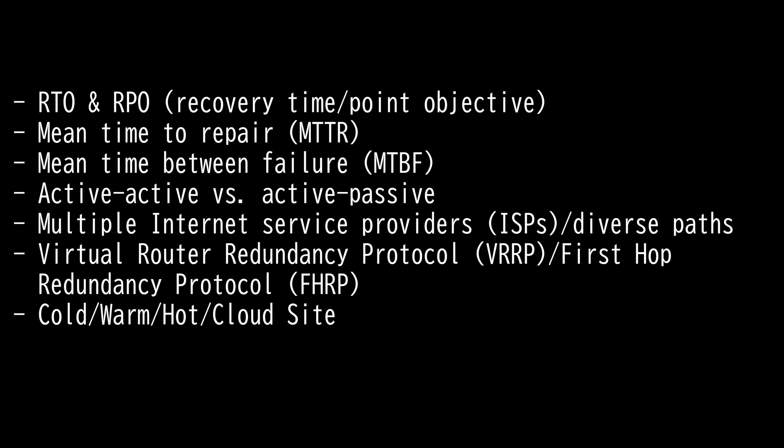Then we have active-active and active-passive. When it comes to high availability, solutions fall into these two types of approaches. An active-active high availability cluster is one of the two most frequently used high availability cluster configurations. They normally consist of a minimum of two nodes running identical services or workloads at the same time. Active-active clusters distribute workloads evenly across a set of nodes to provide load balancing, so no single node is overloaded and response times are improved.